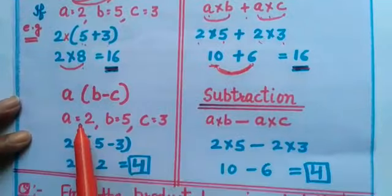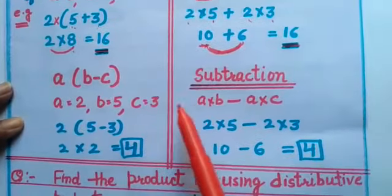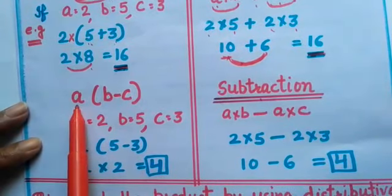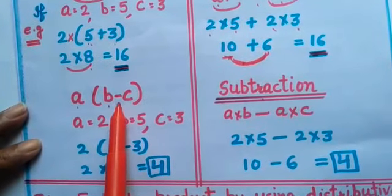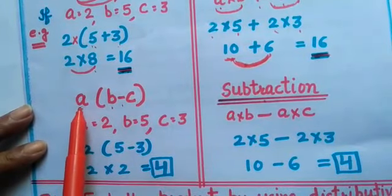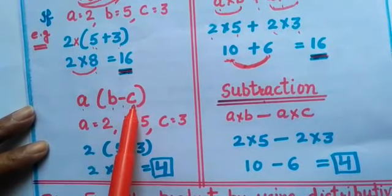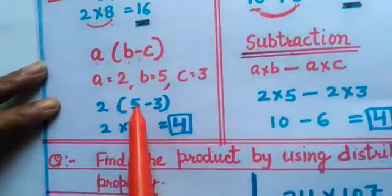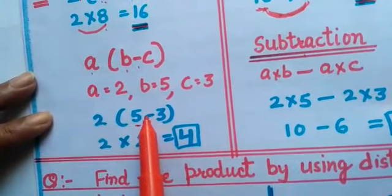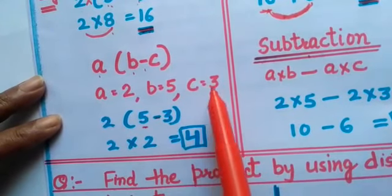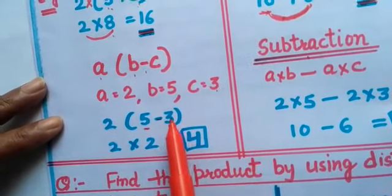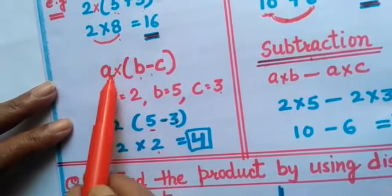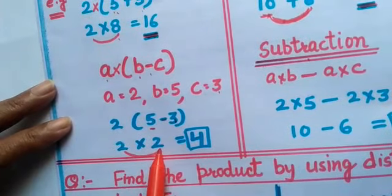Now we will prove it is also applicable over subtraction. Taking A into B minus C — putting in the values, B=5 and C=3, we subtract 3 from 5 to get 2. Multiplied by A, which is 2, we get 2 into 2 equals 4.